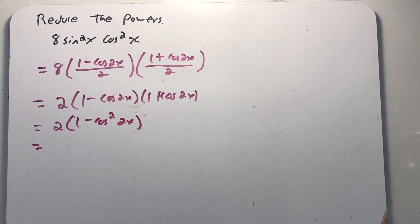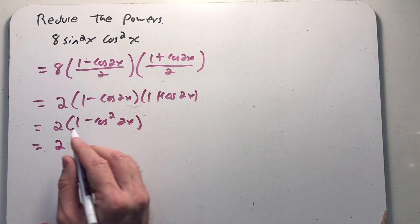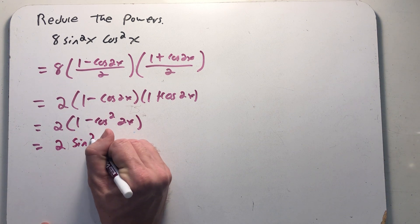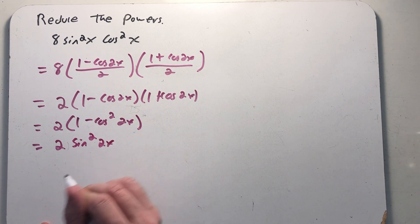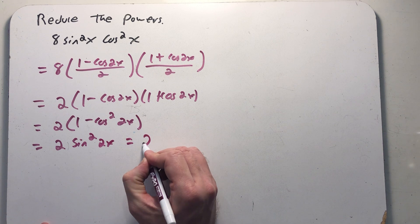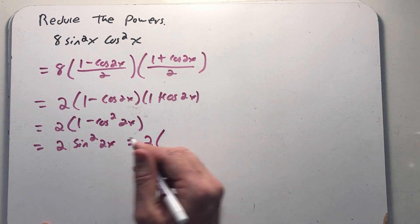I could go on and use a power reducing formula here on that cosine squared, but I kind of want to be sneaky and remember that 1 minus cosine squared is sine squared of 2x. And that way, I just have one less thing to worry about.